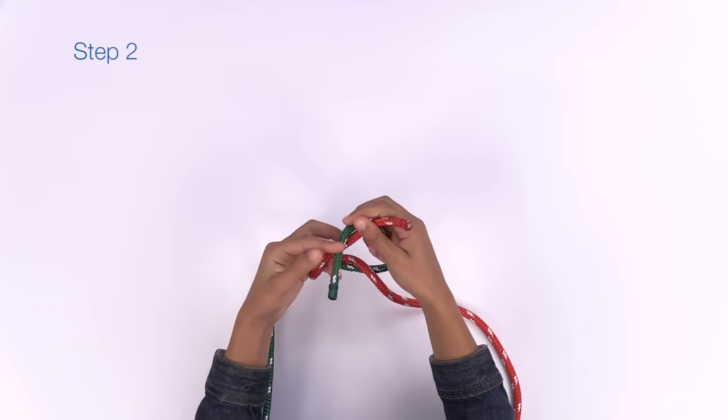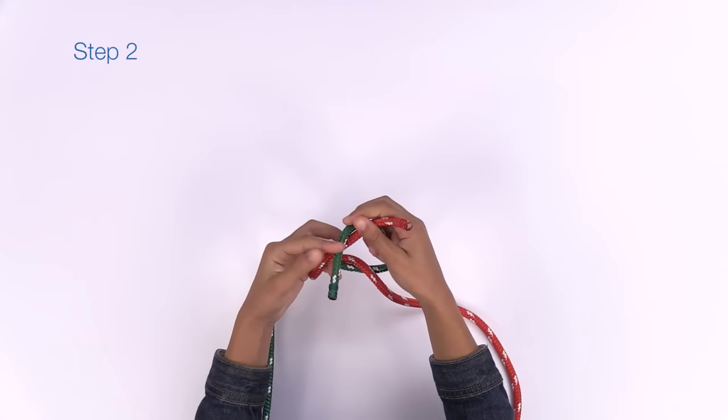Second, cross the rope on the left over the one on the right. Then, tuck it under and bring both hands up. Pull it tight and you're done. Congratulations! You just learned five basic boating knots.